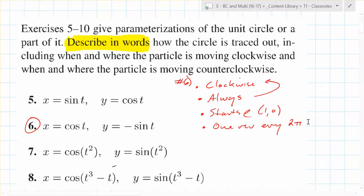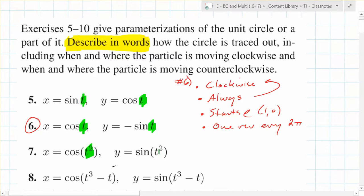Why are these all circles? Well, if you square both of them and add them, you're always going to get back to x squared plus y squared. The key is that what do you see in each of these? You see the same thing. If it's t squared there, it's t squared there. If it's t cubed minus t, it's t cubed minus t. Back to the board, new partner — one person stays, someone rotates.